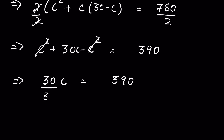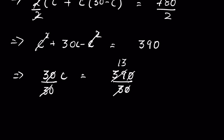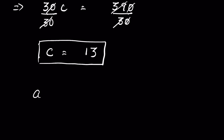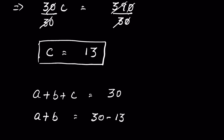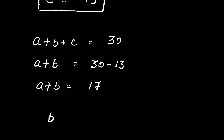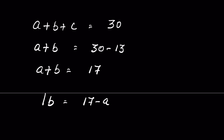Dividing both sides by 30, c is equal to 13. So one of the sides is 13. Since a plus b plus c equals 30 and c equals 13, we get a plus b equals 17. From here we can find b which is equal to 17 minus a. Let this be equation four.